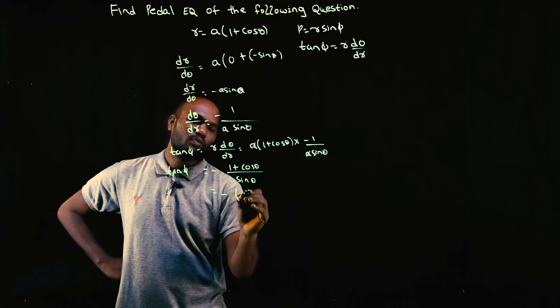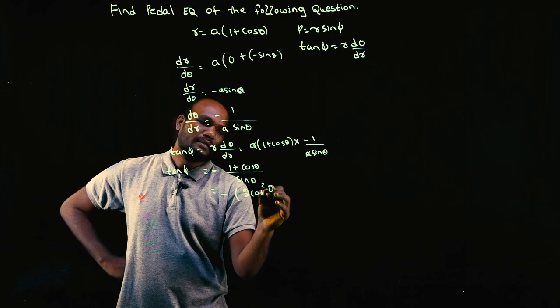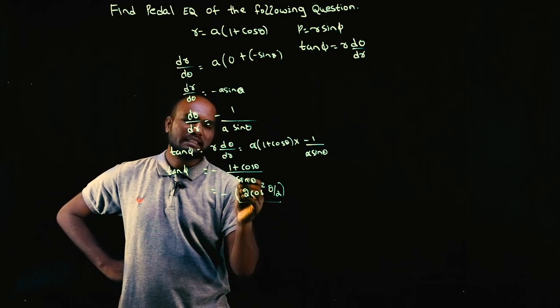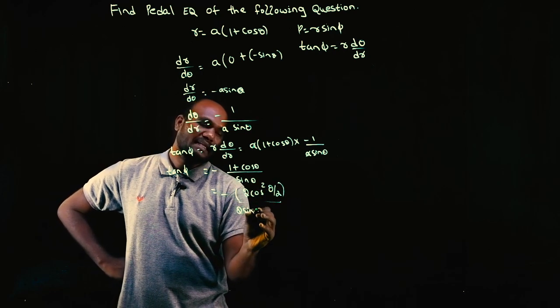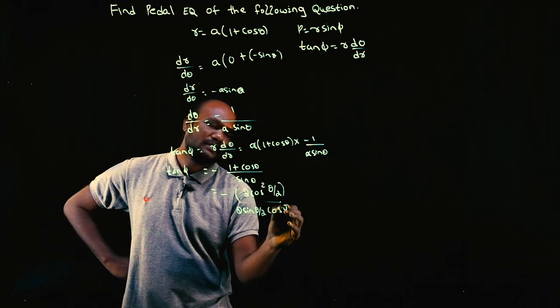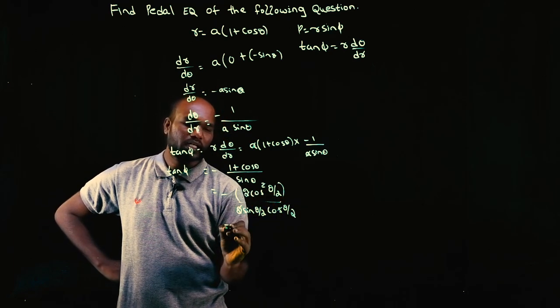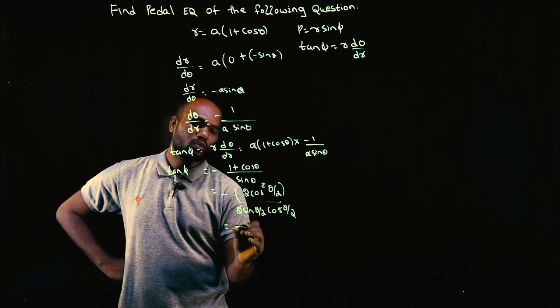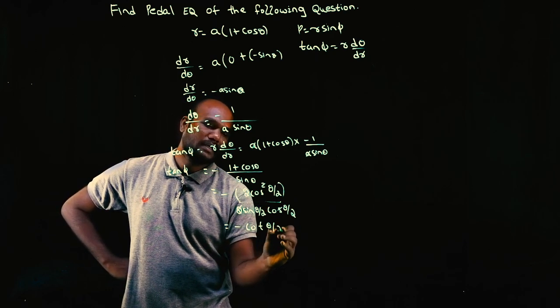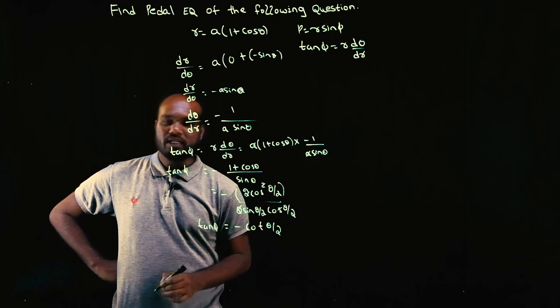Tan phi is equal to minus 1 plus cos theta upon sine theta. 1 plus cos theta is what? 2 cos square theta by 2, divided by sine theta, which is 2 sine theta by 2 cos theta by 2. So 2, 2 can be taken out, cos can be taken out. Cos by sine is cot theta by 2. This is the value of tan phi.